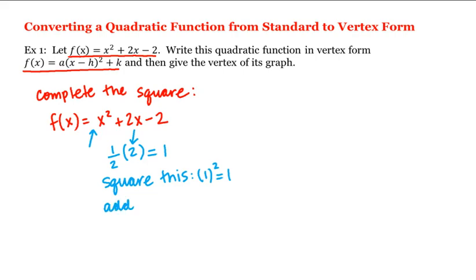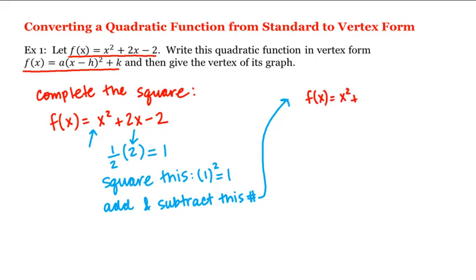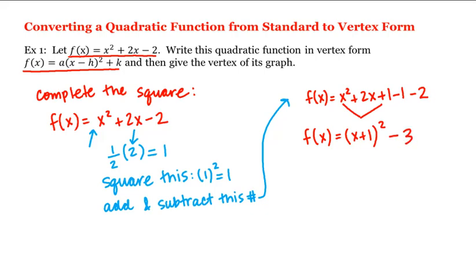We add and subtract this number, so f(x) = x² + 2x + 1 - 1 - 2. These first three terms combine to give us a perfect square: (x + 1)², and then we have -1 - 2, which is -3. So f(x) = (x + 1)² - 3.